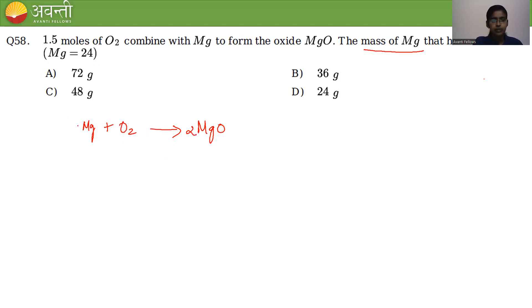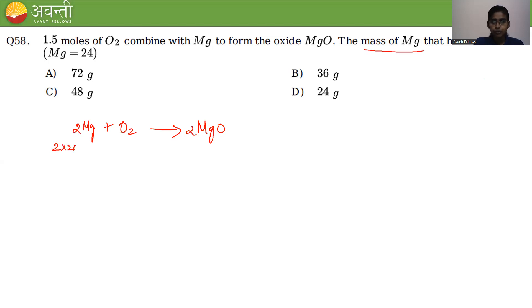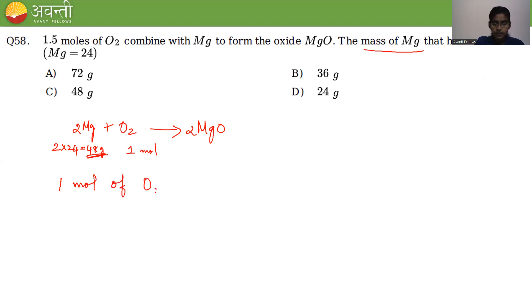From the balanced equation, 2 moles of Mg reacts with 1 mole of O₂. That means 2 × 24 = 48 grams of magnesium reacts with 1 mole of oxygen.